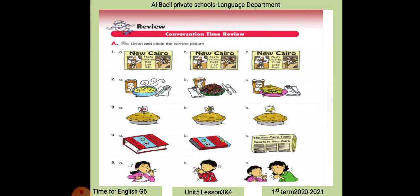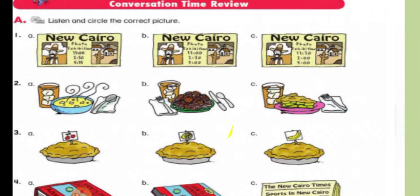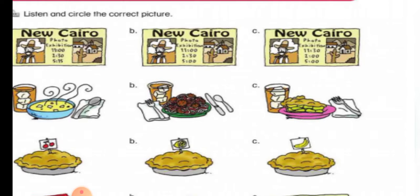Number one. Good morning, Egyptian Museum. How can I help you? Hi, do you have a special exhibition today? Yes, we do. It's an exhibition of old photographs of Cairo. Okay, are there any tours? Yes, tours are at 11, 2:30, and 5. Thanks for your help. You're welcome. The correct answer is B.